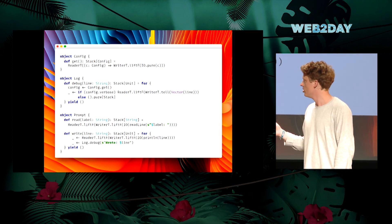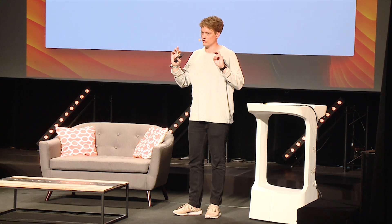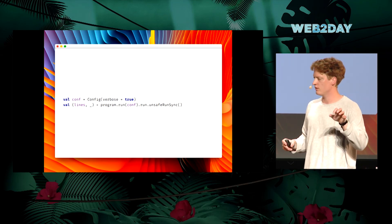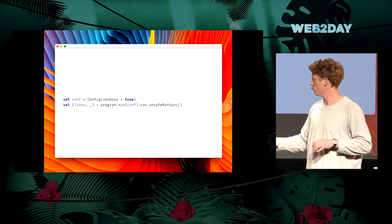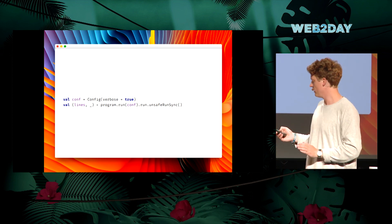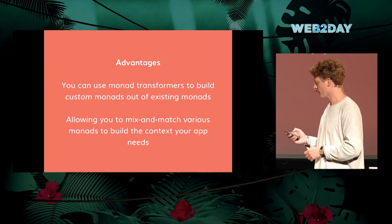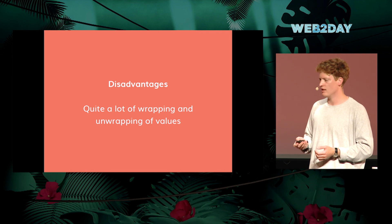Finally, once you have your program, you can run it — this is where we do the unwrapping. You run the program (the method on the Reader Monad), then run it again (the method on the Writer), then execute the IO using unsafeRunSync, which gives us the lines we've been logging and the unit output which we throw away. The cool thing is you can take any Monads you care about, mix them together, and get a context that encompasses all their features. The disadvantage is that it requires quite a lot of wrapping and unwrapping of values, which doesn't look so nice in your programs.